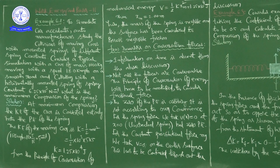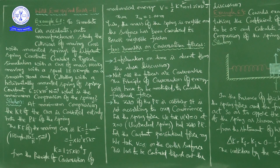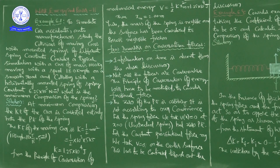First example problem: Example 6.8. To simulate car accidents, auto manufacturers study the collision of moving cars with mounted springs of different spring constants. Consider a typical simulation with a car of mass 1000 kg moving with a speed of 18 kilometers per hour on a smooth road, and colliding with a horizontally mounted spring of spring constant 6.25 × 10³ N/m. What is the maximum compression of the spring?